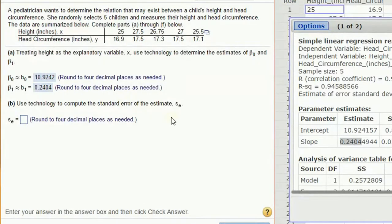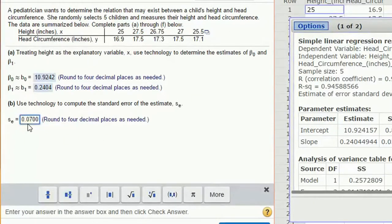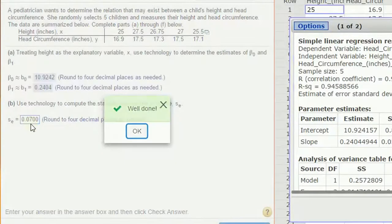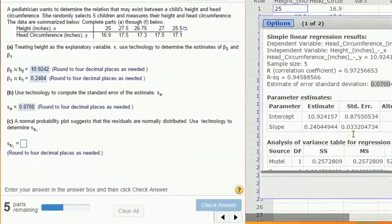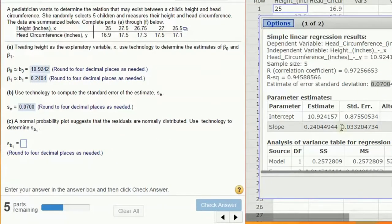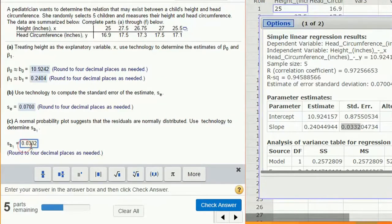Standard error. The standard error is up here. I'm going to take four decimal places for the standard error, which actually is just 0.07. Assuming normal probability plot, the standard error of B1, that's given right here. The standard error of B1, which is our slope, 0.0332. Paste it over.